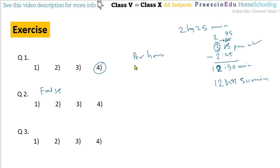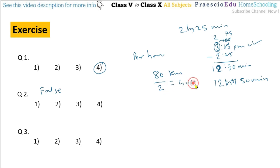Statement 2: a car covers a distance of 40 km in half an hour. If in 1 hour it is 80 km, then in half an hour we multiply by 1/2 or divide by 2, giving 40 km. So option 2 is also correct.